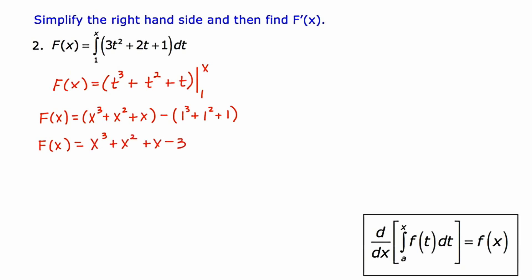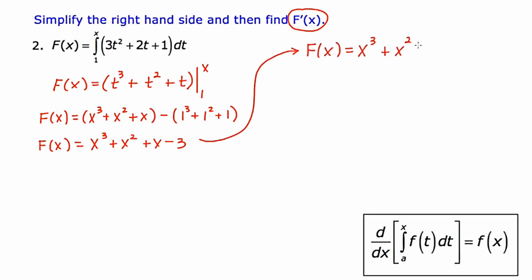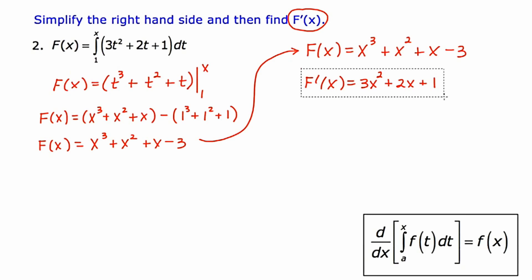Now that I have my function, I can find f prime of x. I'll rewrite what I had and take the derivative, moving from term to term applying the general power rule. The 3 jumps down in front and the power reduces to 2. The 2 jumps down and the power drops from 2 to 1. The derivative of x is just 1, and the derivative of the constant negative 3 is 0, so it goes away. The result is 3x squared plus 2x plus 1, and it took me four steps to get there.